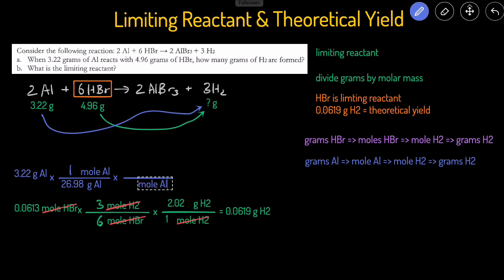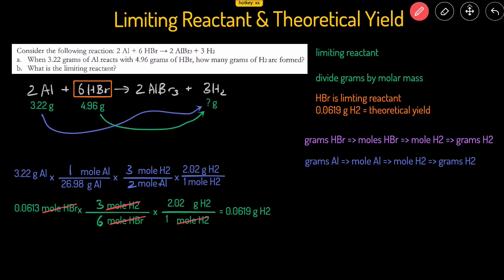Moles of aluminum goes on the bottom and moles of H2 on top. For the mole-to-mole ratio, we look at the balanced chemical reaction: there are 3 H2 for every 2 aluminums. Finally, converting moles of H2 to grams of H2 uses the molar mass of H2: 2.02 grams per mole. Checking our units: grams of aluminum cancels, moles of aluminum cancels, and moles of H2 cancels, giving us 0.362 grams of H2.